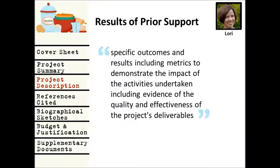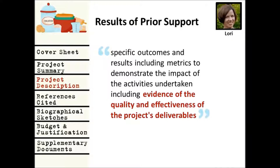If the PI or a co-PI has had prior funding from NSF related to what you're proposing, you have to start the project description with a section titled 'Results from Prior NSF Support.' Reviewers will be looking for evidence of the quality and effectiveness of your prior work — this is where your evaluation results from past projects should go. Keep in mind that not all evaluation results are considered equally important by reviewers. Prioritize reporting higher-level impacts: student outcome data is going to be more important than data about website hits or satisfaction.